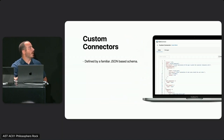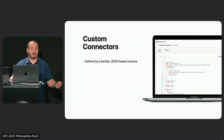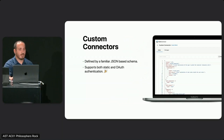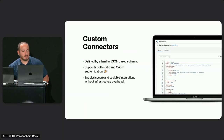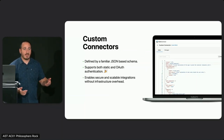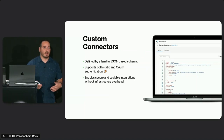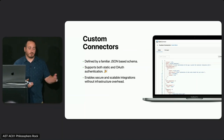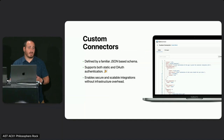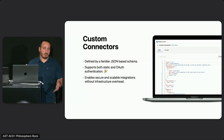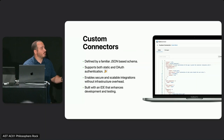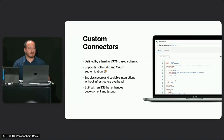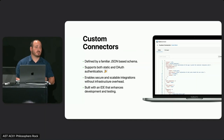To summarize custom connectors: they're defined by familiar JSON schema, easy to get up and running quickly. We support both static and OAuth 2 authentication — OAuth 2 authentication was added about a week and a half ago, it's there, you can use it, we'd love feedback. It enables secure and scalable integrations without infrastructure overhead. When you did this within FileMaker, you had to be conscious of the performance impact on your server or the delay to a client. Claris Connect abstracts that — you don't need to worry about scalability. The IDE enhances development and testing: you get real-time test results and real-time feedback on your definition to make sure it's as you'd expect.